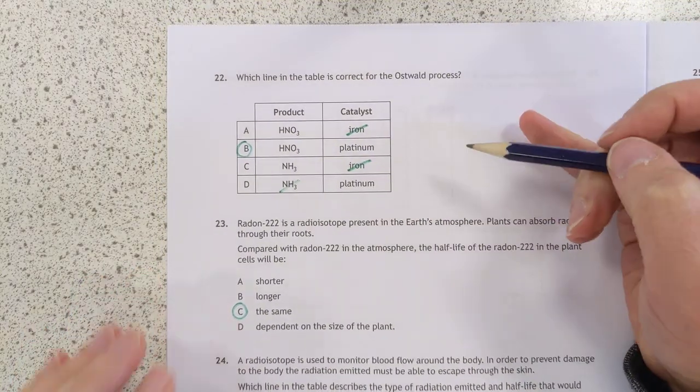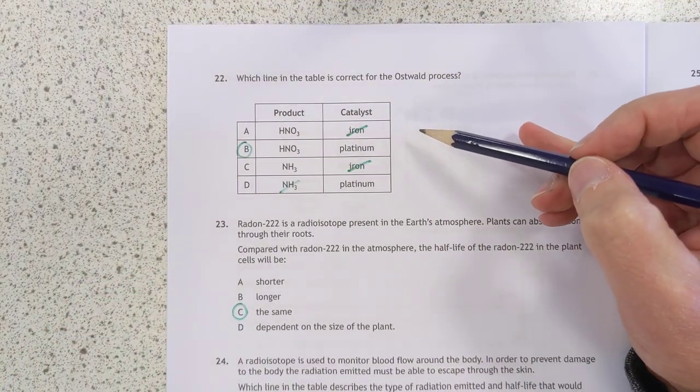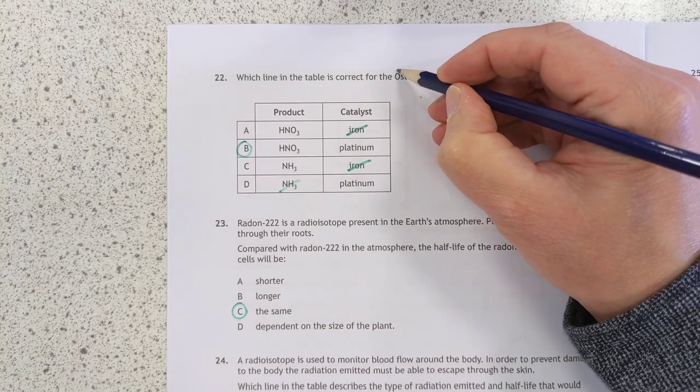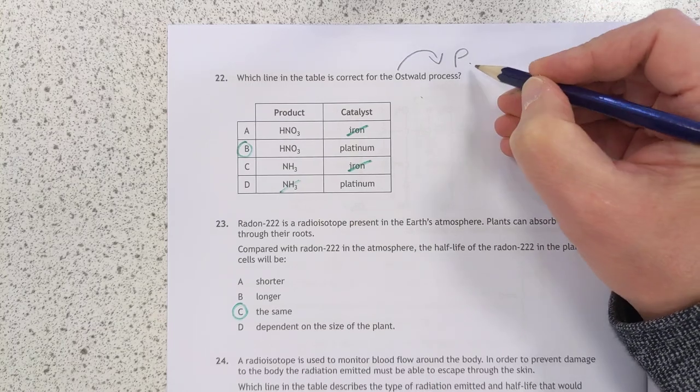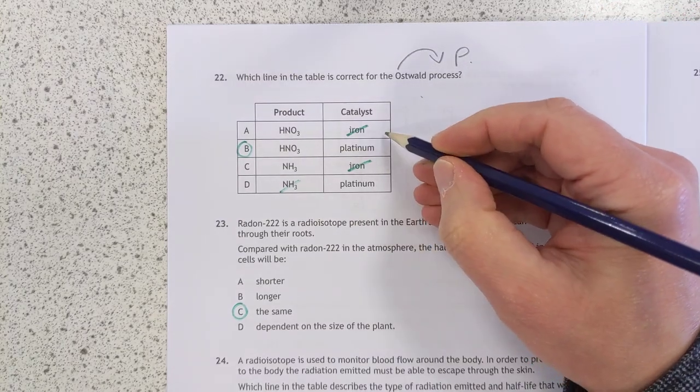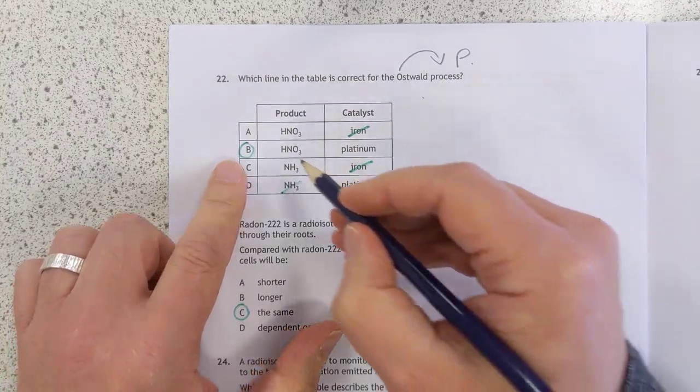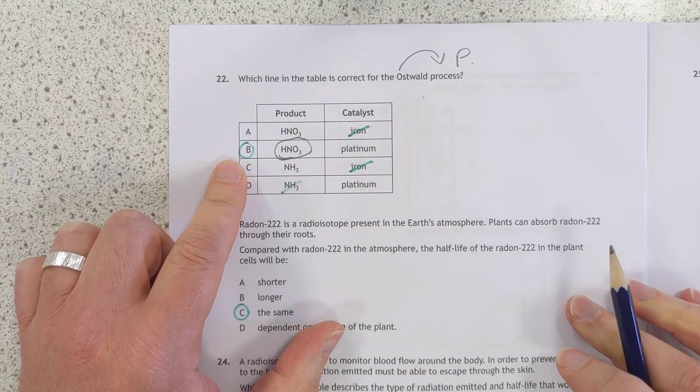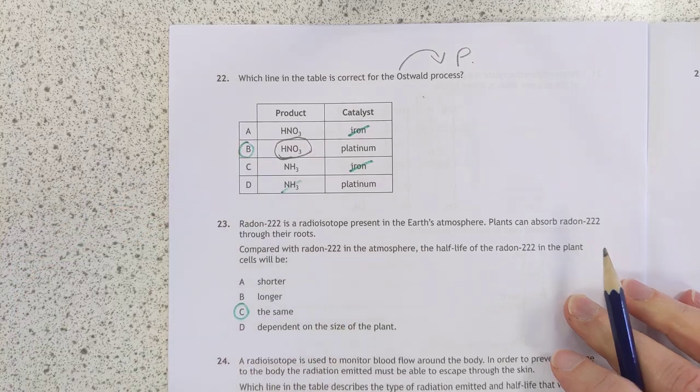22. Oswald process. Straightforward memory, basically. If you were in my class, you go up one letter in the alphabet, you get to P. And that tells you the catalyst, which is platinum. So I've thrown out the two irons. And the other part of memory is just remembering that you make nitric acid for the Oswald process. So the answer is B.